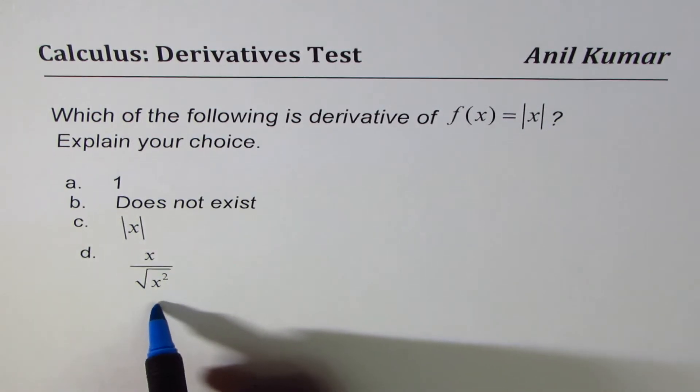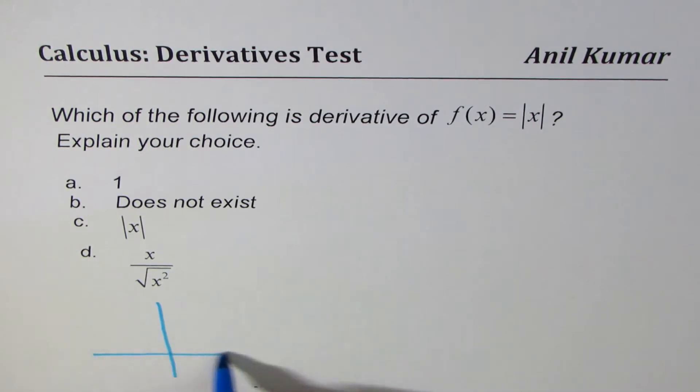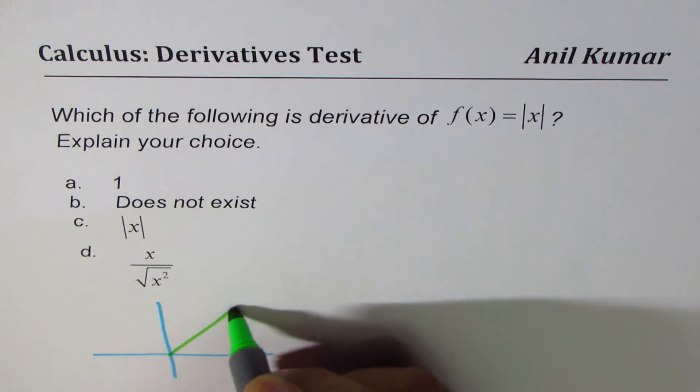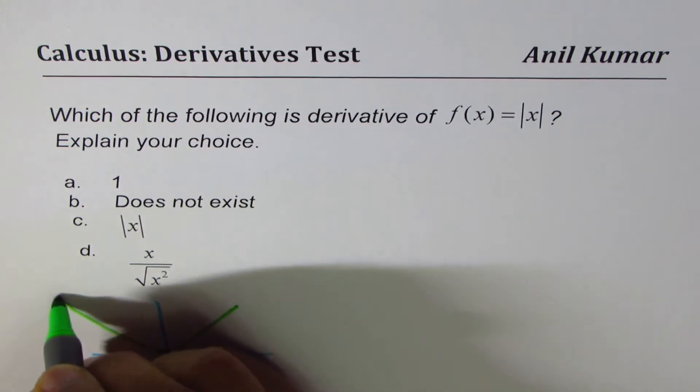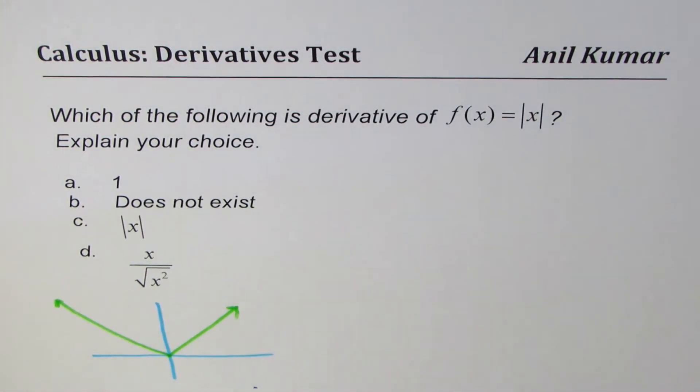Let me sketch the function for you. Let us say absolute x will be kind of like this. You need to find derivative of this function. Well, as you can see, it is a piecewise function.